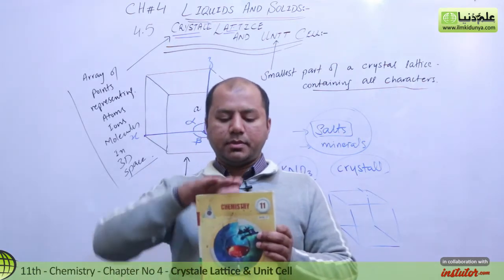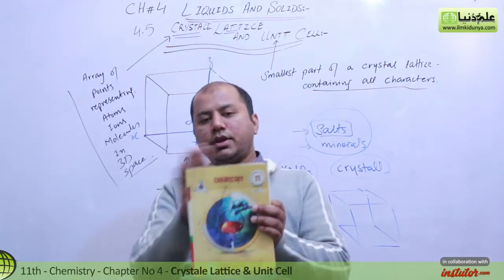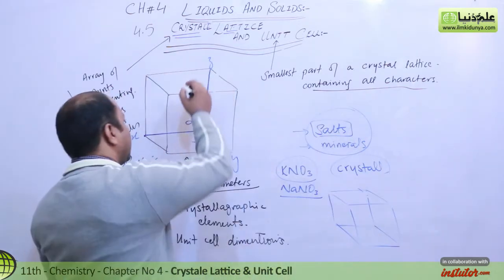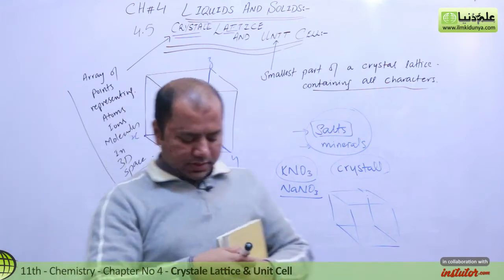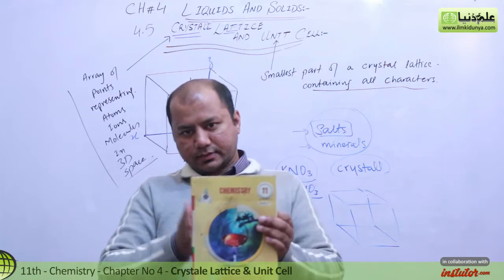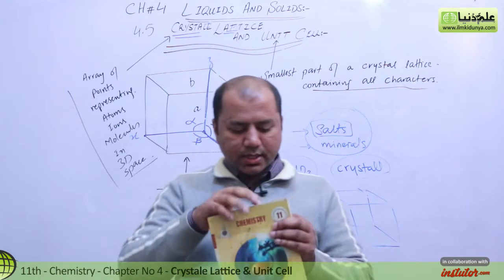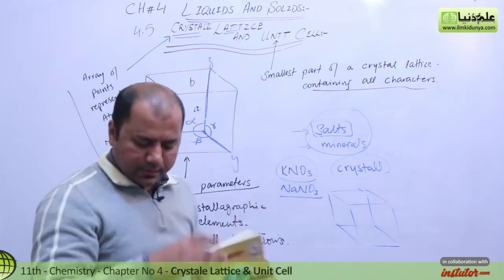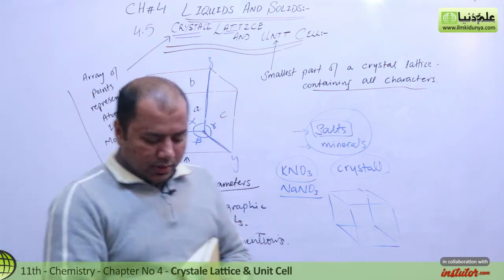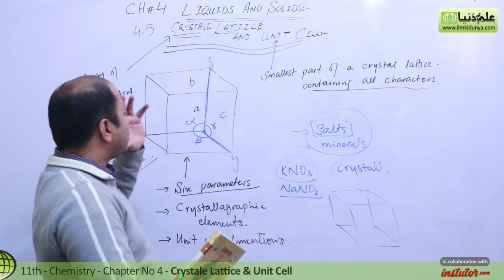After side 'a', we have a side on the upper portion. Let's call it 'b'. The same side, this side will also be 'b'. Then students, you can name this side to this side, let's call it 'c'. And this side will be 'c'. I think we have come to know about three sides of a unit cell.